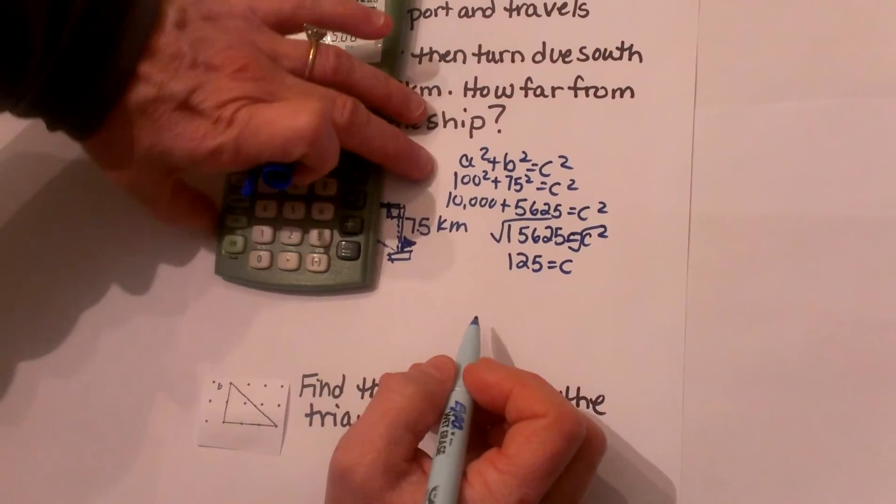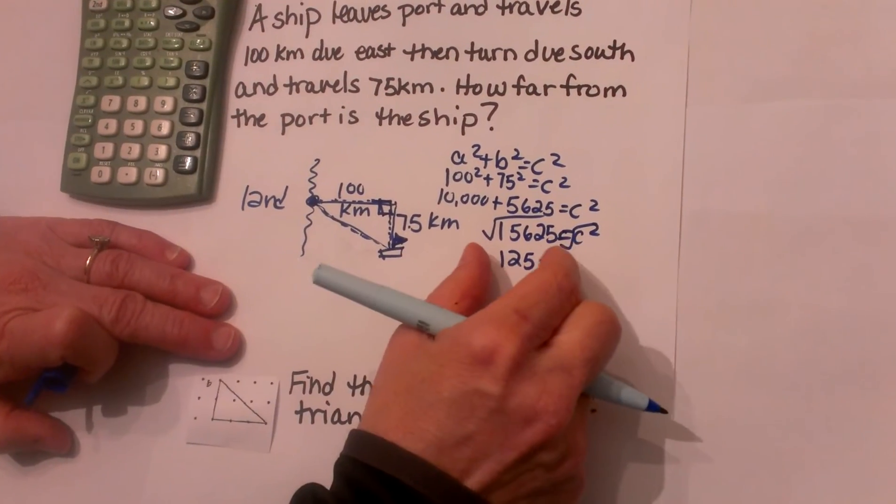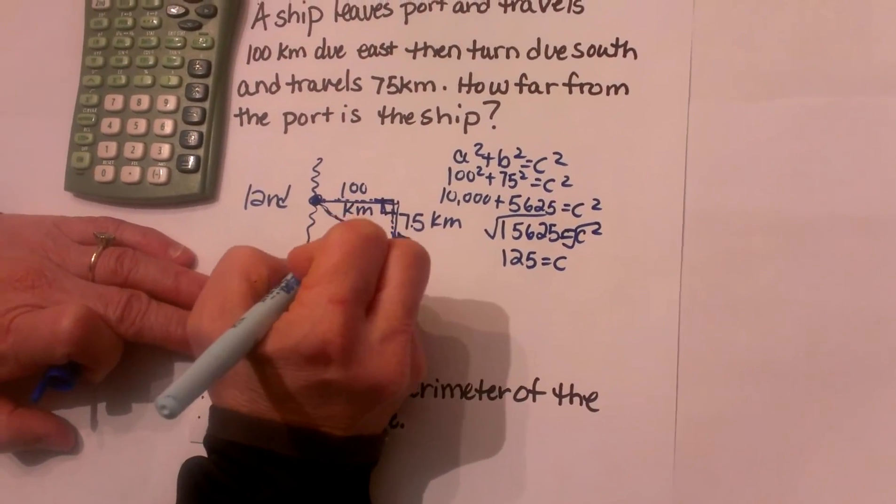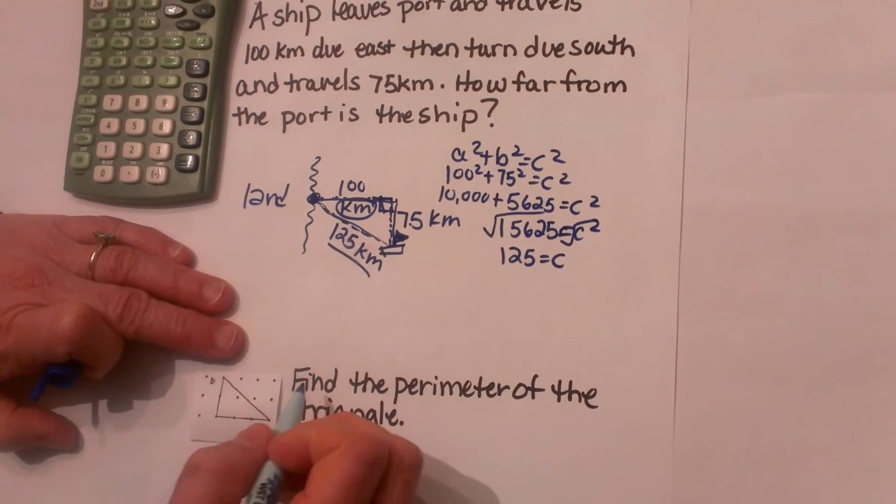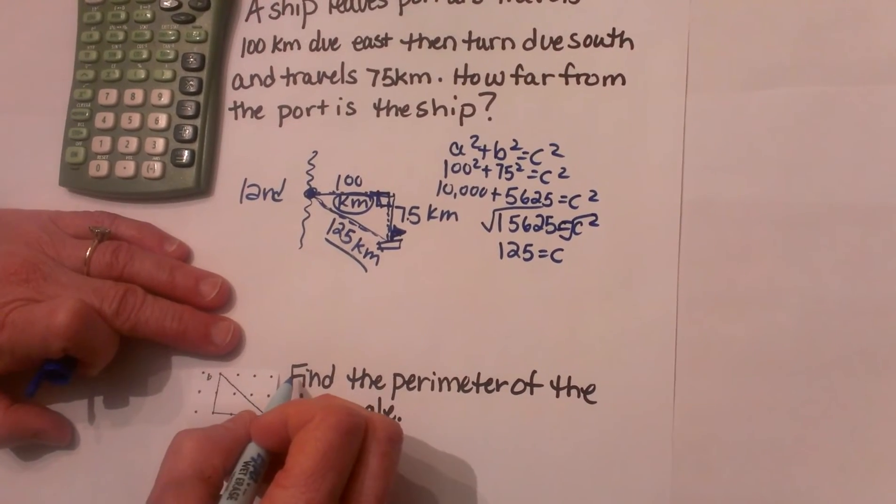So let's go back and put it in the context of the problem. 125 is my distance and that is in kilometers. So the ship is 125 kilometers from port.